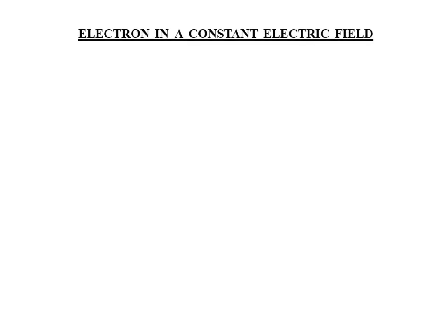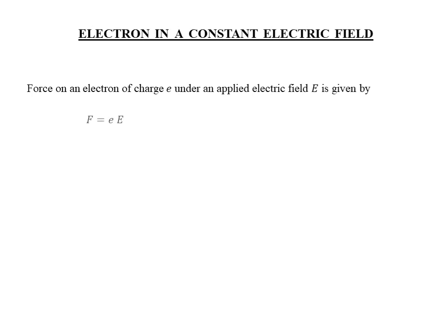Let us consider the situation that an electric field is applied to an electron of charge e. Then the force on the electron due to this applied electric field is given by f equals the charge of the electron times the applied electric field. With basic knowledge in physics, we know that force is the rate of change of momentum. Using this, the force relation can now be written as shown here. Further, as we have just learned that the momentum of a particle is given by h-cross k, then replacing p with h-cross k, we get the force relation. As h-cross is a constant, it can be taken out and the differentiation acts only on the wave vector k.